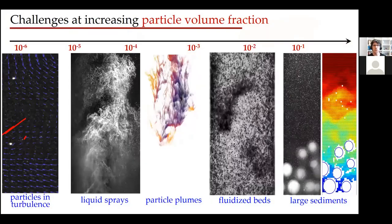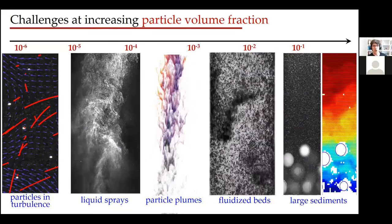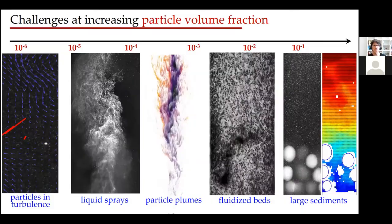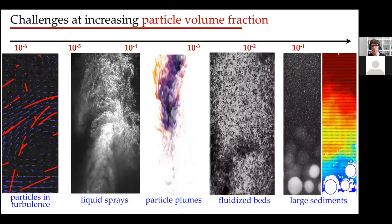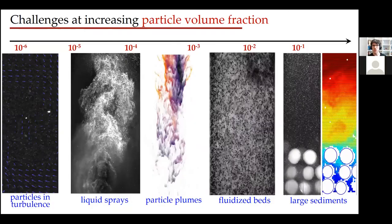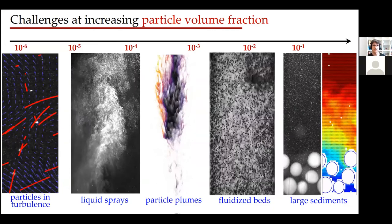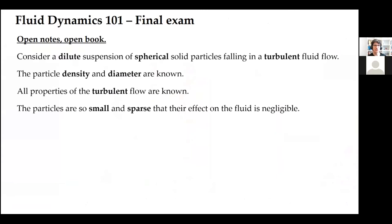In my group we investigate particles in turbulence over a wide range of concentration regimes. The challenges increase substantially as you move from low particle volume fractions — really low, 10 to the minus 6 or even less — which is the regime we'll discuss mostly today, to liquid sprays or particle plumes where concentration can be 10 or 100 times larger, and even to fluidized beds and dense regimes where collisions become important. But today we'll stay on the simple, dilute side. I'll give you a little open-book exam — I hope you're ready.